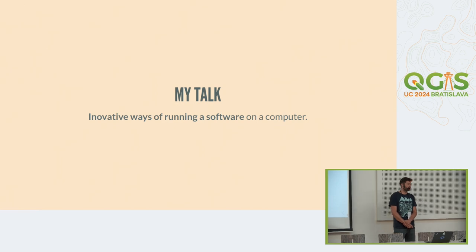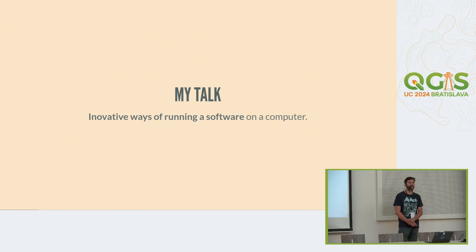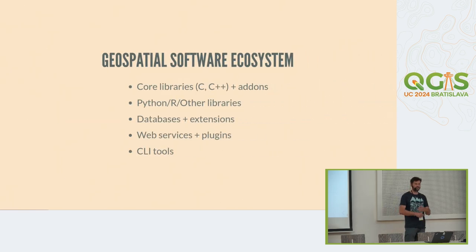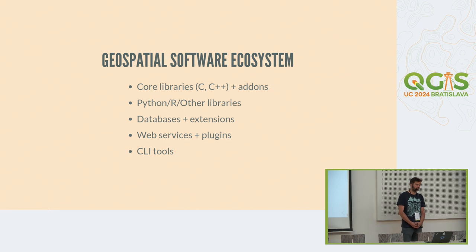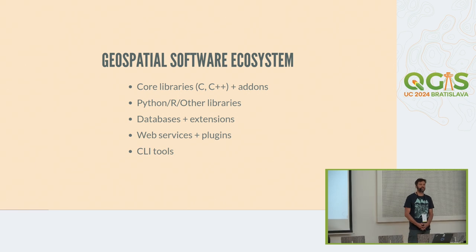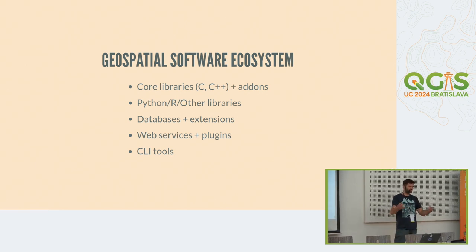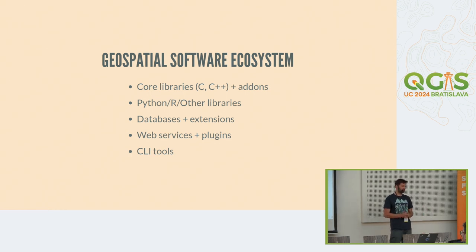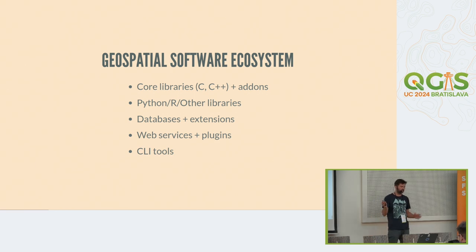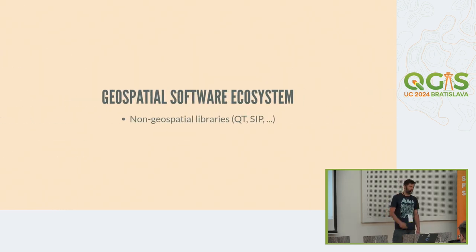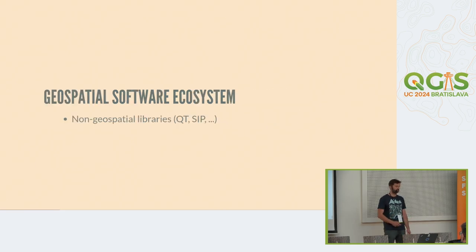This talk is going to be about some quite innovative ways of running software on a computer. I can't describe it in other words because this technology doesn't look too much like anything people are used to. In the geospatial world we have lots of bits and pieces that we put together and use for our work. In reality it's so many interconnected pieces of software — core libraries like GDAL and PROJ with add-ons, Python modules, a database, a web server, CLI tools, and for example to build QGIS we use a lot of non-geospatial software like Qt and SIP.